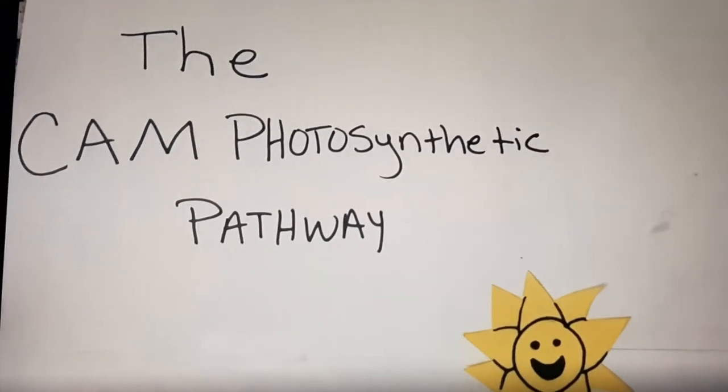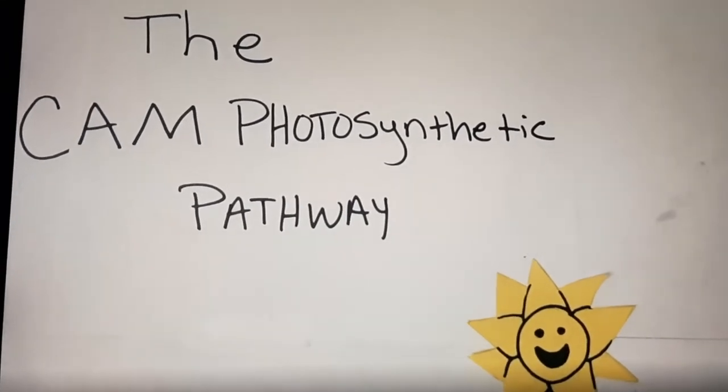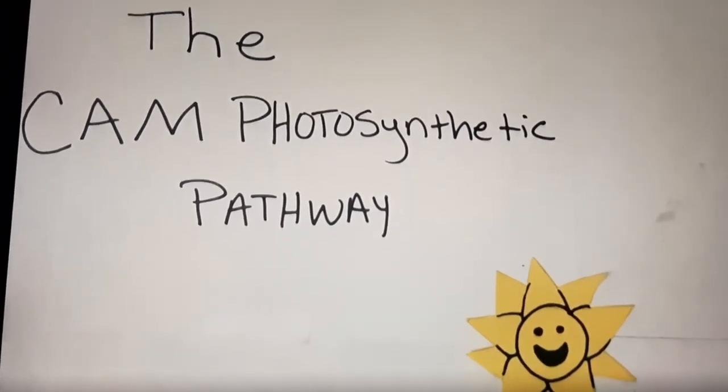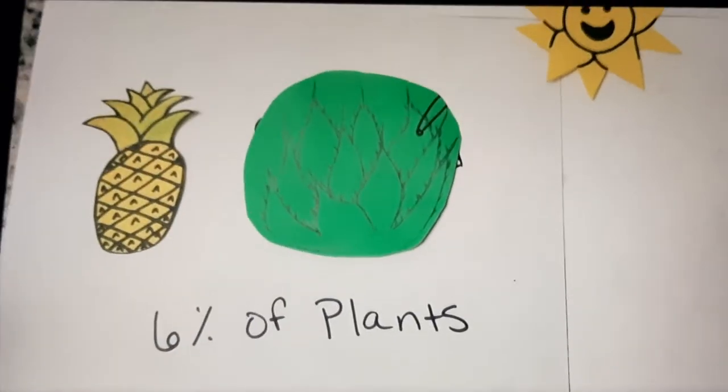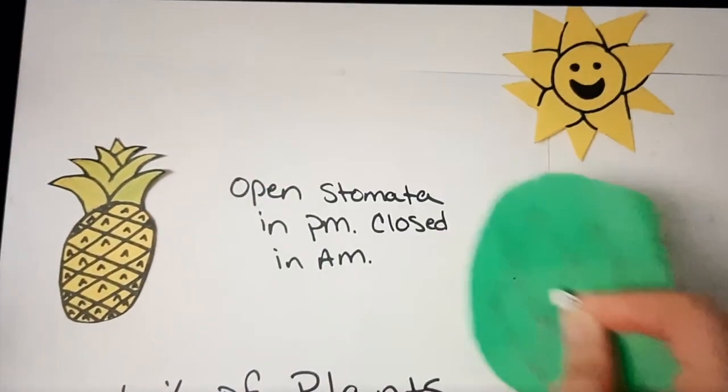The C4 pathway is an evolutionary adaptation of plants in hot, arid climates. Examples of C4 plants include pineapples and agave tequila. C4 plants make up 6% of flowering plants.